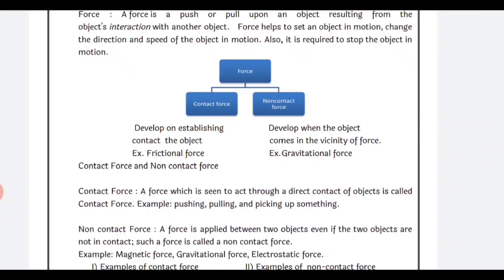Contact force is developed when establishing contact with the object — when two objects come in contact, contact force develops. Non-contact force develops when the object comes in the vicinity of the force — even without direct contact, non-contact force can develop. Examples: frictional force is a contact force, and gravitational force — which the earth exerts — is a non-contact force. The definition: a force which is seen to act through direct contact of objects is called contact force.